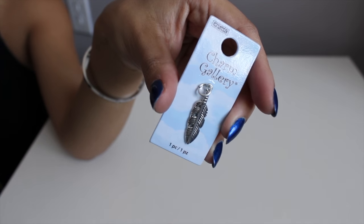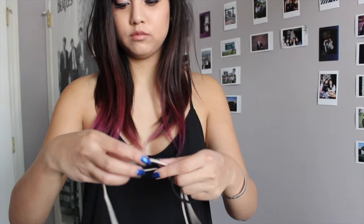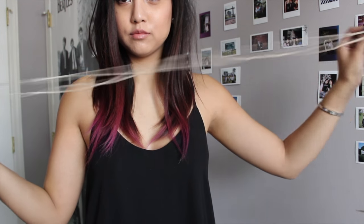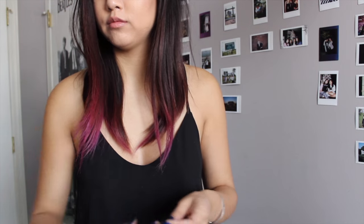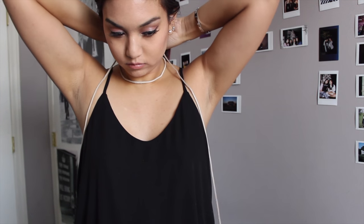The first step is to measure out how long you want your wrap necklace to be. I wanted mine to wrap around my neck twice and kind of dangle a bit longer.